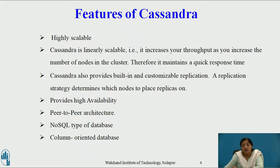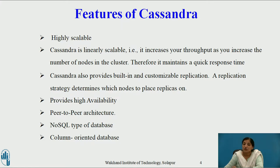Cassandra is called a column-oriented database. There are two types of orientation in databases: row orientation and column orientation. In row orientation, the contents of the database tables, when stored into the internal memory of the computer, are stored row-wise — that is, the contents of the first row are followed by the contents of the second row, followed by the contents of the third row, linearly, adjacent to each other. In column-oriented databases, the contents of the table are stored into internal memory column-wise — that is, the content of the first column is followed by the content of the second column, followed by the content of the third column, and so on.